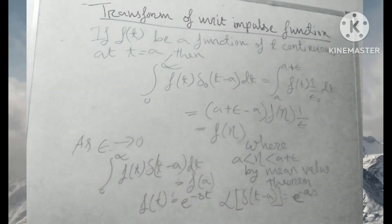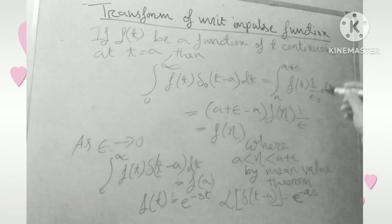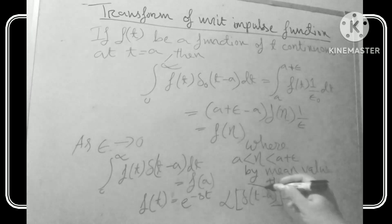Transform of unit impulse function. If f of t be a function of t continuous at t equals a, then the integral from 0 to infinity of f of t into del of t minus a dt equals f of a by the mean value theorem.